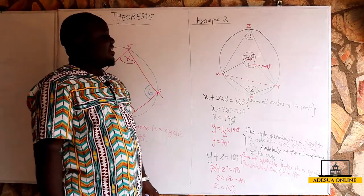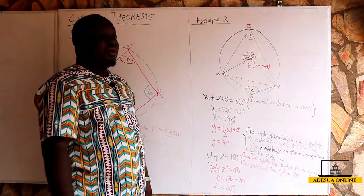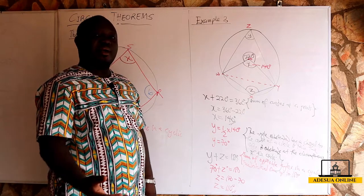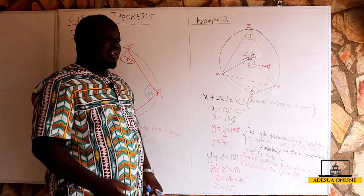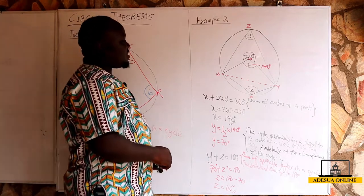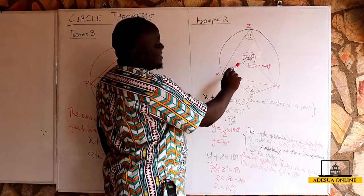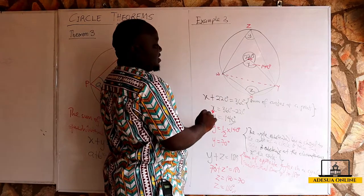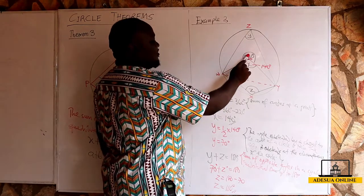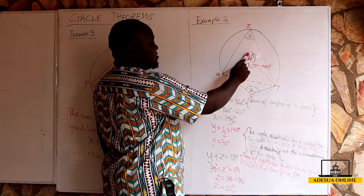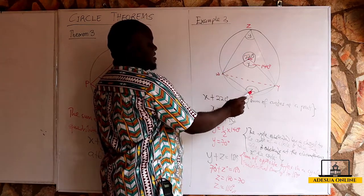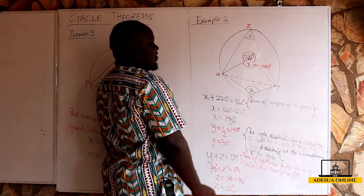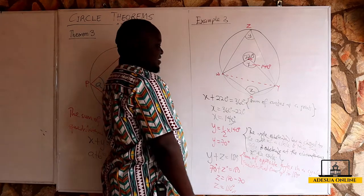In our first theorem, I asked a similar question and used half of the central angle to get the value of the circumference angle, which is exactly what we applied here.